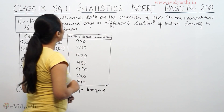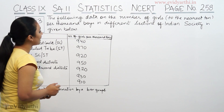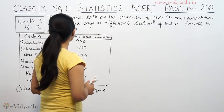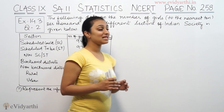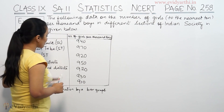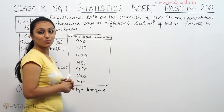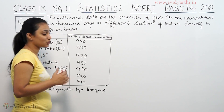The question asks: given the following data on the number of girls to the nearest 1,000 boys in different sections, we are given the number of girls per 1,000 boys and the inter-ratio for each section.